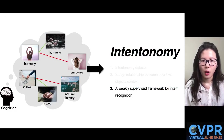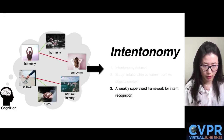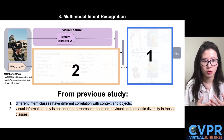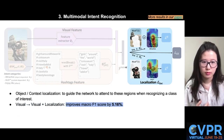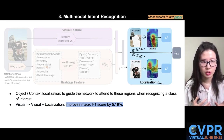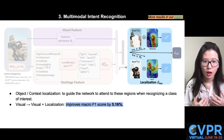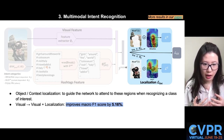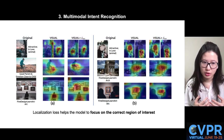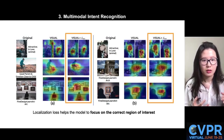Lastly, we propose a multi-modal framework for intent recognition. We identified two challenges for intent classification from previous study, so we propose two different modules to address these issues. We first introduce a localization loss that forces the network to depend more on the region of interest for certain classes. Comparing to using visual features alone, adding this localization loss improves the macro F1 score by around 5%. We can see that the localization loss helps the model focus on the correct region, especially when the image is scattered with multiple objects.